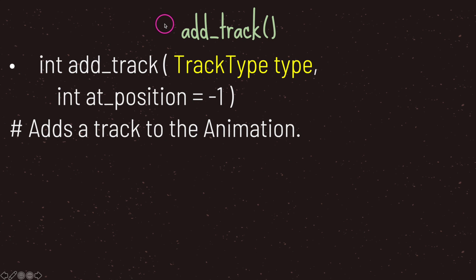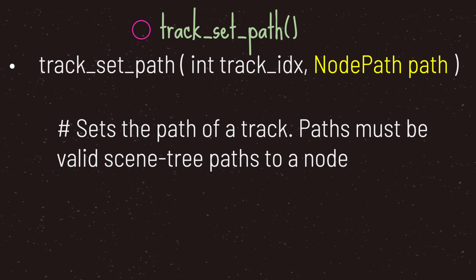To add a track, use the add_track method, declare your track type, and define its position — by default it's negative one, meaning it's added at the end of the array. The add_track method returns an integer value representing the index position in the array. After adding a track, use the appropriate set method — in this case track_set_path — providing the track index followed by the node path to the property you want to interpolate.